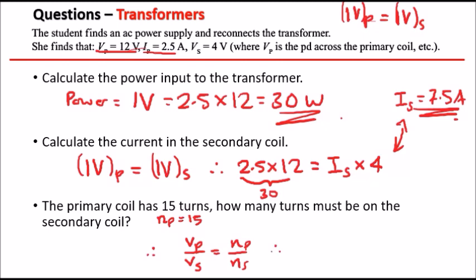Remember the ratio of voltages equals the ratio of number of turns. Now we just literally plug in the values. We know VP VS. VP is 12, VS is 4. And this is identical to NP is 15 and NS is what we're trying to calculate.